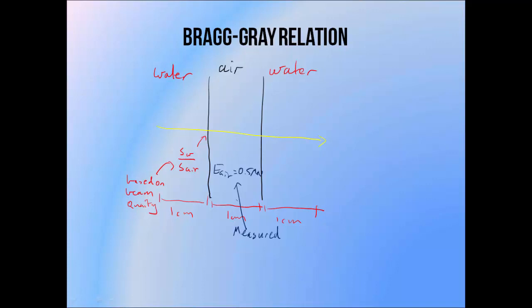For photons this is the TPR20,10, or for electrons this is the R50 value. We can use the equation to combine the measured energy in air and the stopping power ratio to give us the energy deposited in water at this point. So the energy deposited in water is equal to the energy measured in air, multiplied by the electron stopping power in water — the amount of energy lost per centimetre in water — divided by the stopping power in air.